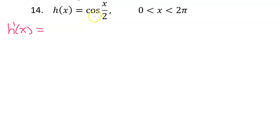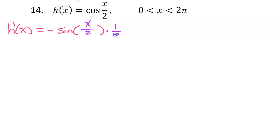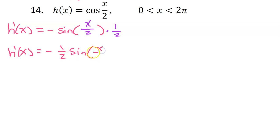This is going to be the chain rule, so the outer function is cosine. The derivative of cosine is negative sine. But then we have the inner function of x over 2, so we must multiply by the derivative of the inner function, which will be 1 half. So I will have negative 1 half sine of x over 2. There's my derivative.